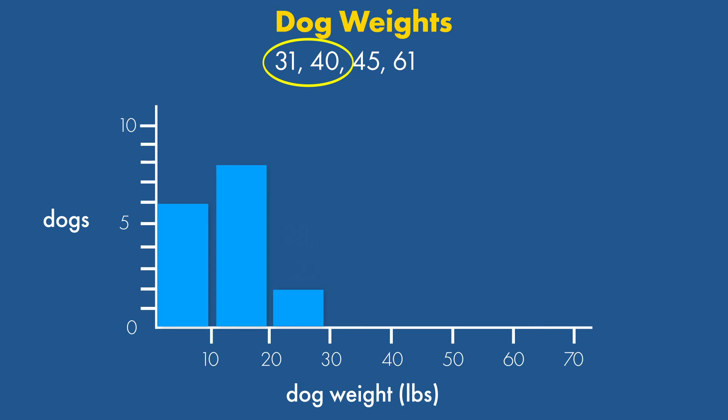So, each bin includes the bottom value in the range, but not the top value. In this case, 30 to 39 pounds.